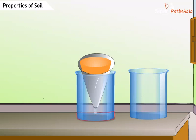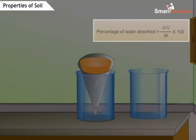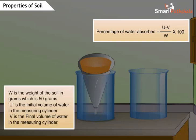Now let us calculate the percentage of water absorbed by the soil using the formula displayed on the screen. In the formula, W is the weight of the soil in grams, which is 50 grams. U is the initial volume of water in the measuring cylinder. V is the final volume of water in the measuring cylinder.